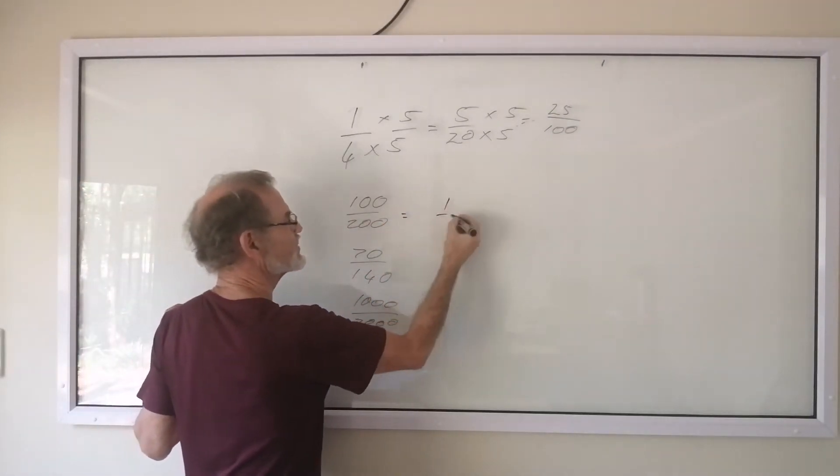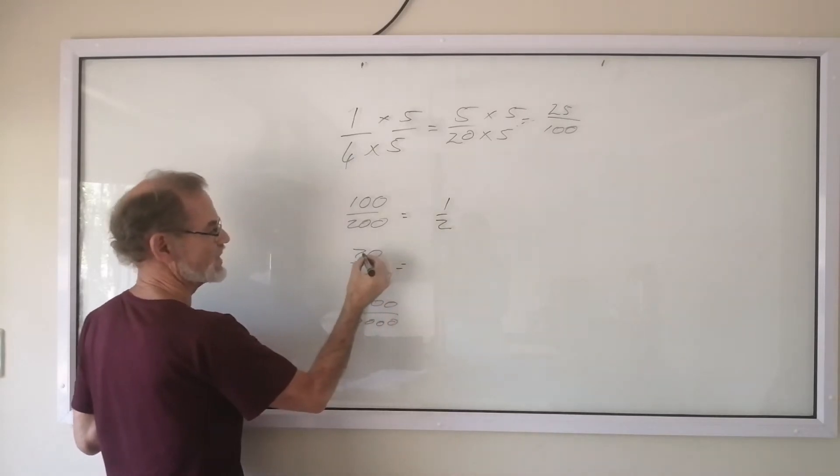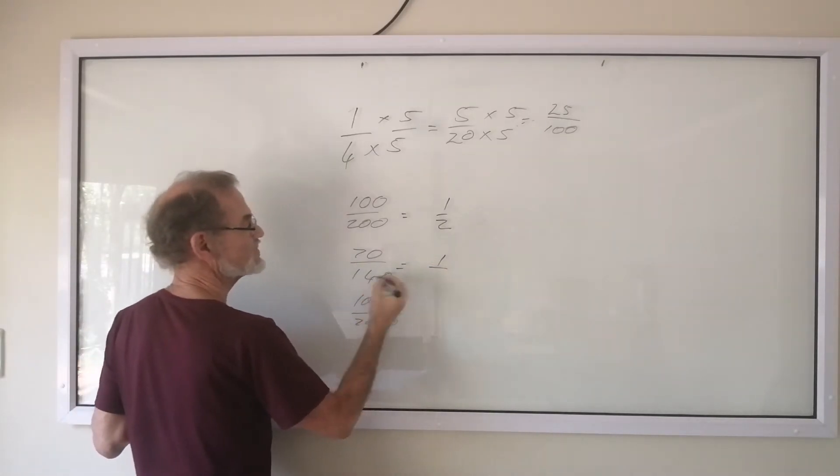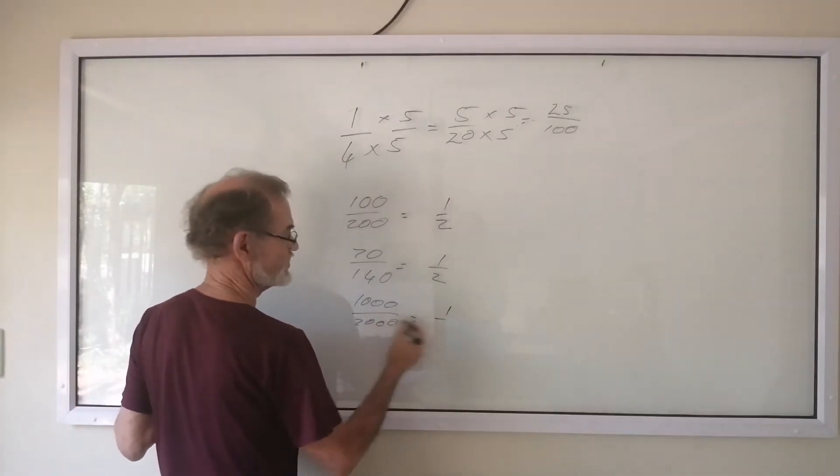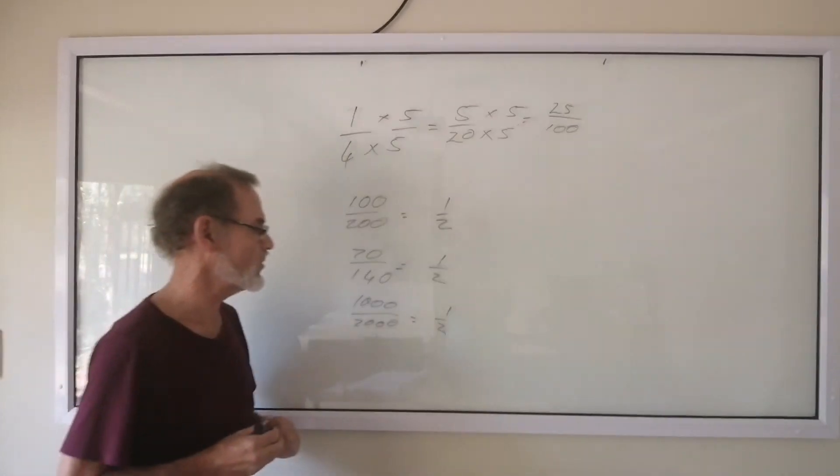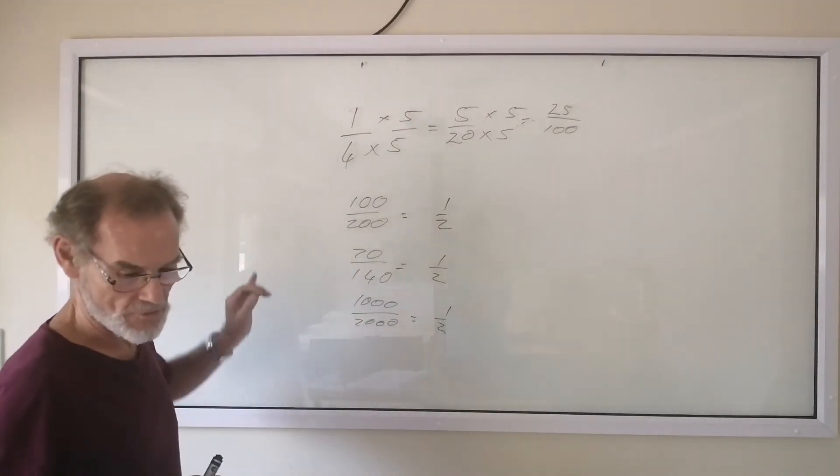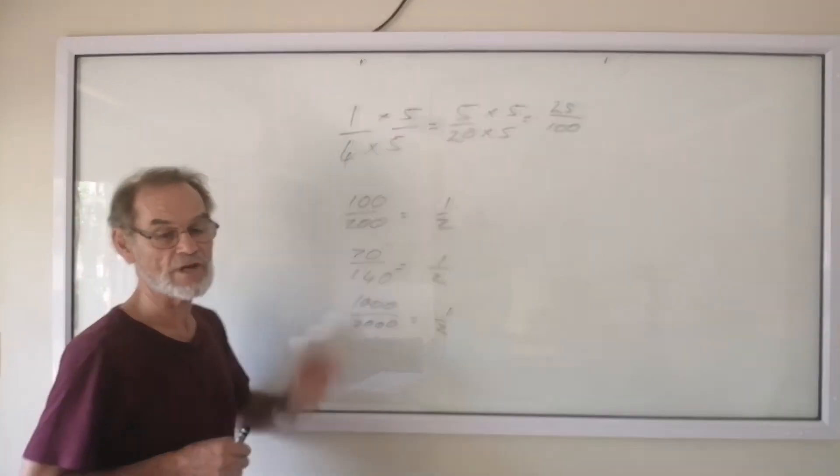100/200 is a half. 70/140, 70 goes into itself once, 70 goes into 140 twice. 1000 goes into 1000 once, 1000 goes into 2000 twice. These are all equivalent fractions. They are a half. And that is the way that we can use to compare fractions as well.